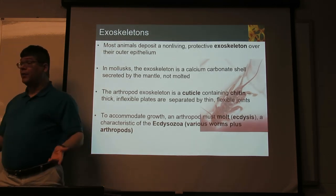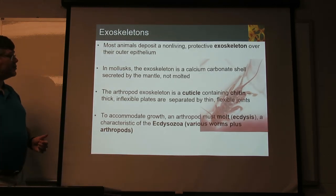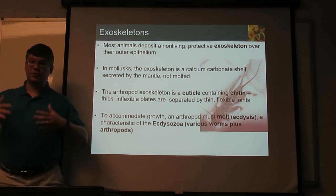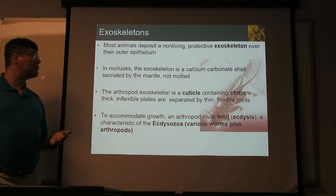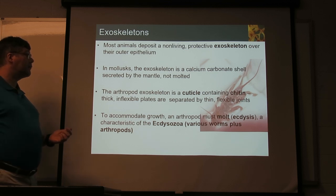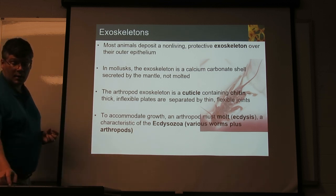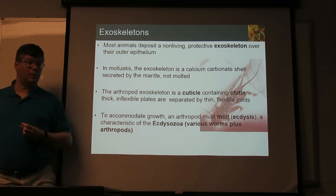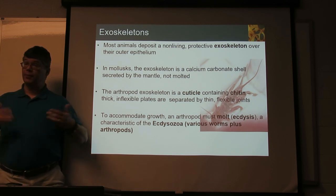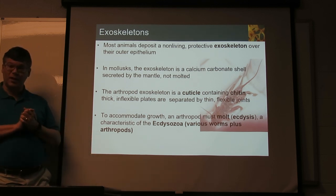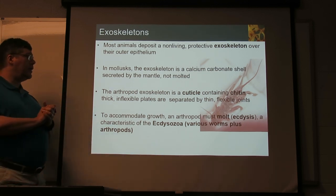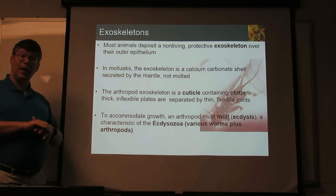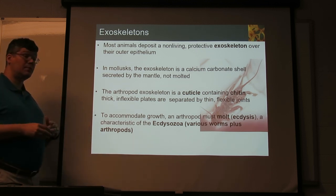The most common thing for animals to have, however, is an exoskeleton. This is a non-living tough layer on the outside. This may be made of minerals, such as calcium carbonate in snails and clams. Or, it could be a more organic-rich one, like an arthropod's.